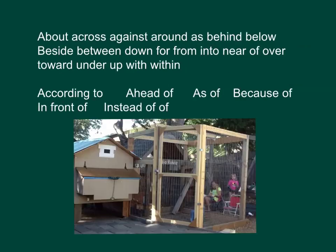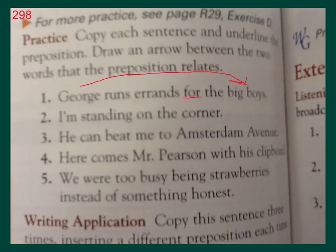Go ahead and pause this and get all these down. And here's a list of some of the more common two-or-more-word prepositions, and a picture of the coop and the run and two of my kids — that was before the coop was painted. The practice for prepositions is on page 298 in the textbook. They want you to copy the sentence and underline the preposition — in this case, it is 'for.'